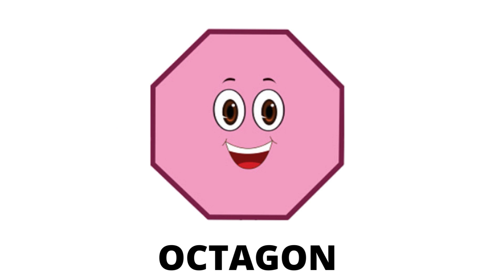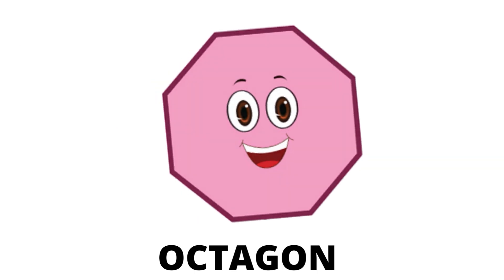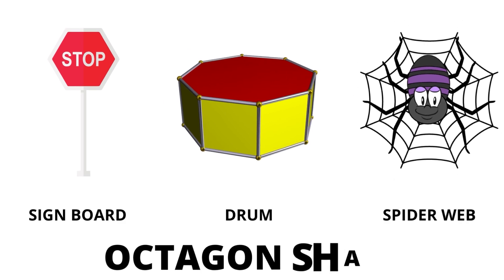Our next shape is octagon. Octagon has eight sides. The real life examples of octagon are stop sign, drum, and spider web.